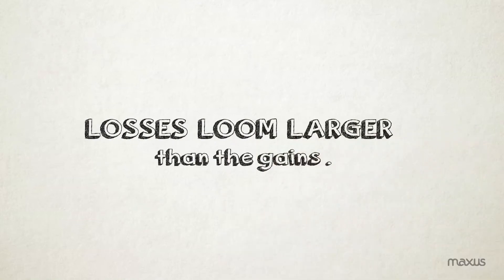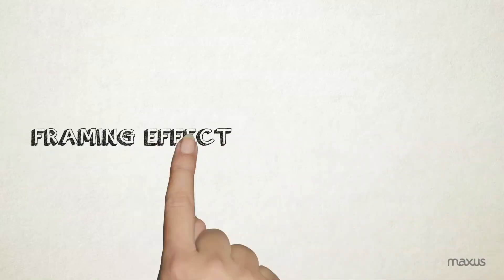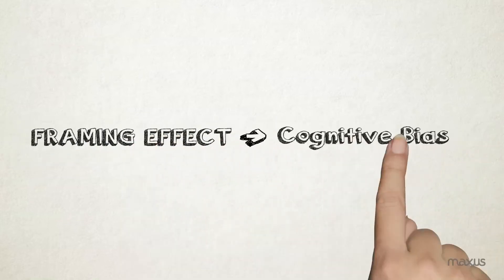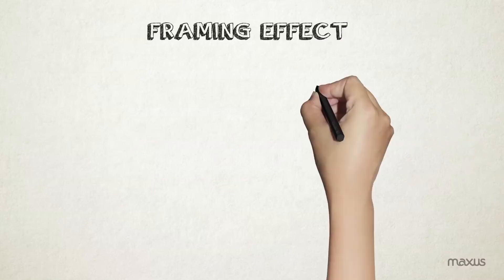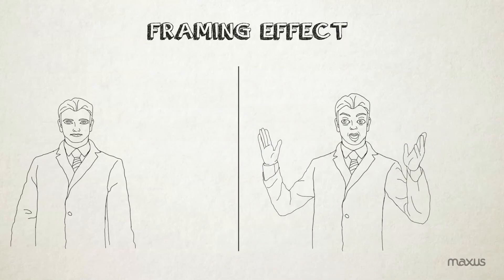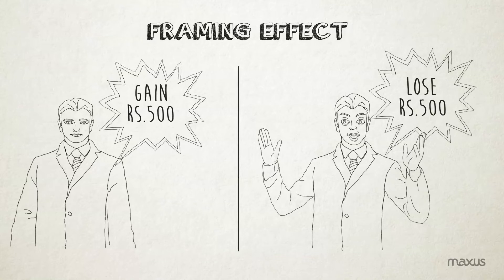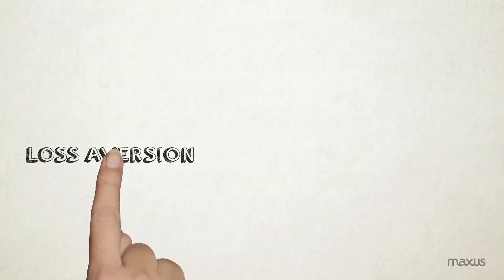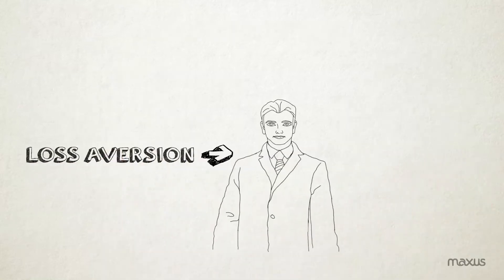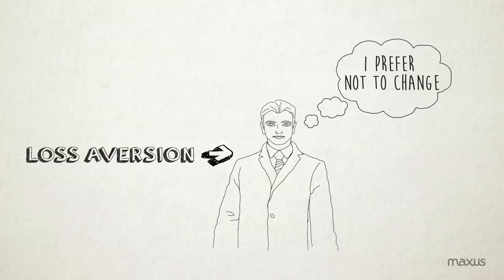This loss aversion leads to an anomaly called framing effect, a cognitive bias that makes people react to a particular choice in different ways, depending on whether it is presented as a loss or a gain. Similarly, loss aversion also leads to a tendency to stick to previous decisions, even when a change might actually be better.